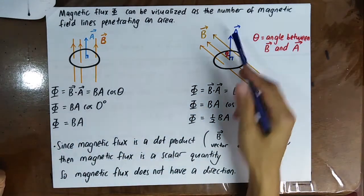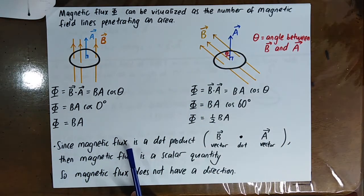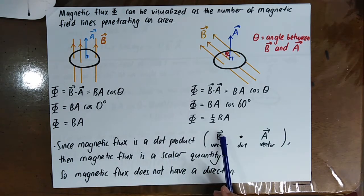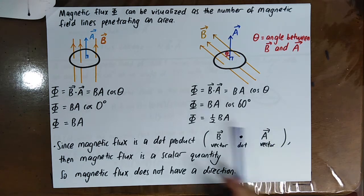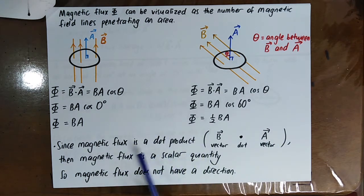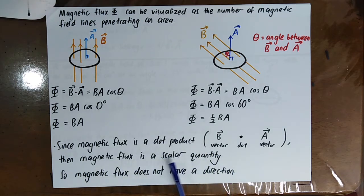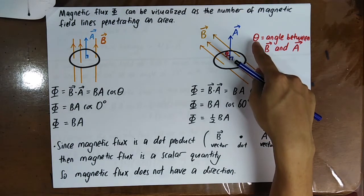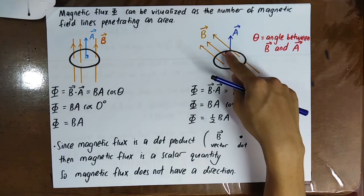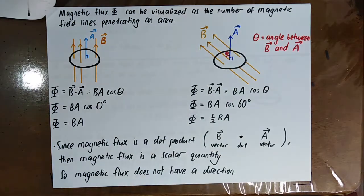The magnetic flux is a dot product — it is the magnetic flux density B dot the area vector A. Therefore the magnetic flux is a scalar quantity and does not have a direction. Always remember that theta is the angle between B and the area vector.